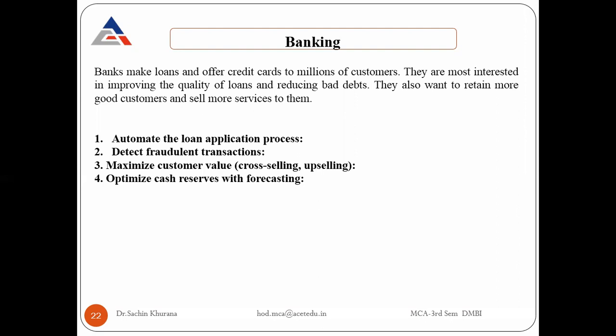Optimizing cash reserves with forecasting: banks must always maintain a minimum liquid cash amount because when a customer wants to withdraw cash, if the bank doesn't have it, that creates a negative impression. How much cash reserve should be present in a bank branch is decided using BI techniques based on previous transaction data — large branches may maintain crores while small branches maintain 10 to 15 lakhs.